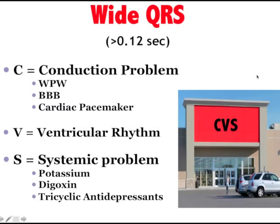Could it be a systemic problem — hyperkalemia, or a toxicologic overdose like digoxin or tricyclic antidepressants? What really got my attention was that he received two negative chronotropes and it did not help — two different classes. When he got digoxin as a third so-called funnel drug — beta blockers, calcium channel blockers, and digoxin slow conduction at the AV node — he went into cardiac arrest. He went into a pulseless VTAC.